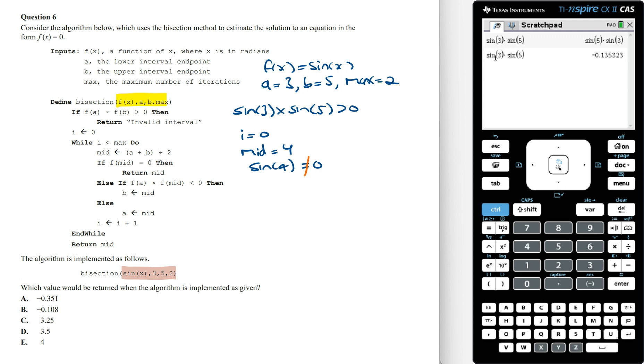Else, if f of a times f of mid is less than 0, we need to test if sin of 3 times sin of 4 is less than 0, then the value of b is going to equal mid.